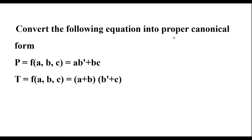Convert the following equation into proper canonical form. Here two functions are given. One is f(a,b,c) = a·b' + b·c and another one is f(a,b,c) = (a+b)·(b'+c). We can see that the first is in sum of product form and the second is in product of sum form. We are supposed to convert these two functions into proper canonical form, meaning standard SOP and standard POS.